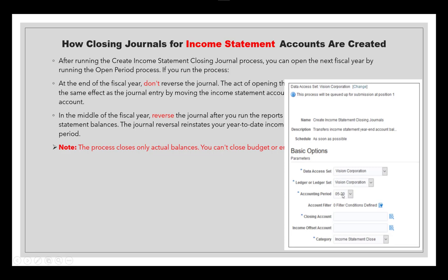In the scheduled process, you'll find create income statement closing journals and create balance sheet closing journals. Parameters include: data access set, ledger or ledger sets, accounting period, closing account, and income offset — where you can optionally specify an income offset account instead of the Retained Earning Account. By default, net balances between expenses and revenue move to the Retained Earning Account. The category defaults to 'Income Statement Close'; the other is 'Balance Sheet Close'. You can also schedule these from Tools > Manage Schedules. Together, these cover all account types in the chart of accounts: assets, liabilities, revenue, expenses, and equity.